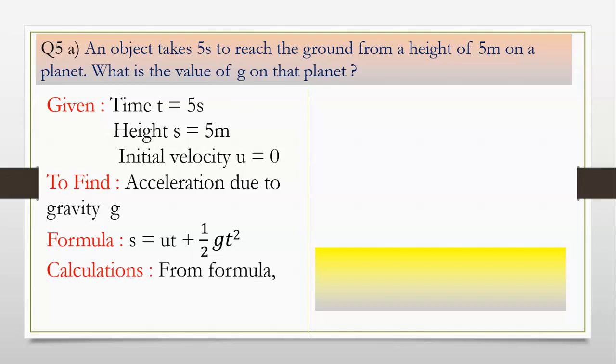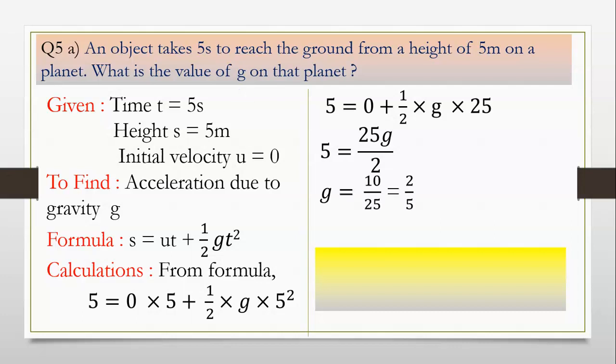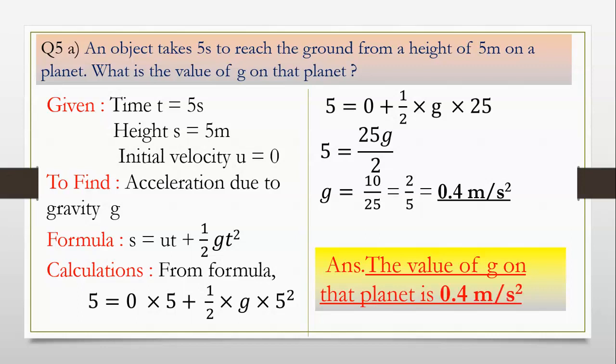Calculations from formula. Substitute the values given. Then, 5 is equal to 0 into 5 plus half into g into 5 square. Therefore, 5 is equal to 0 plus half into g into 25. 5 is equal to 25g upon 2 which is g is equal to 10 upon 25 equal to 2 upon 5 equal to 0.4 meter per second square. Answer: the value of g on that planet is 0.4 meter per second square.